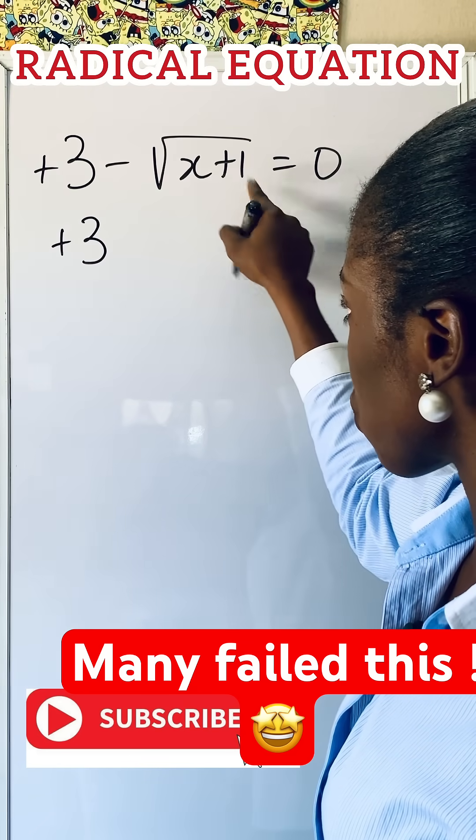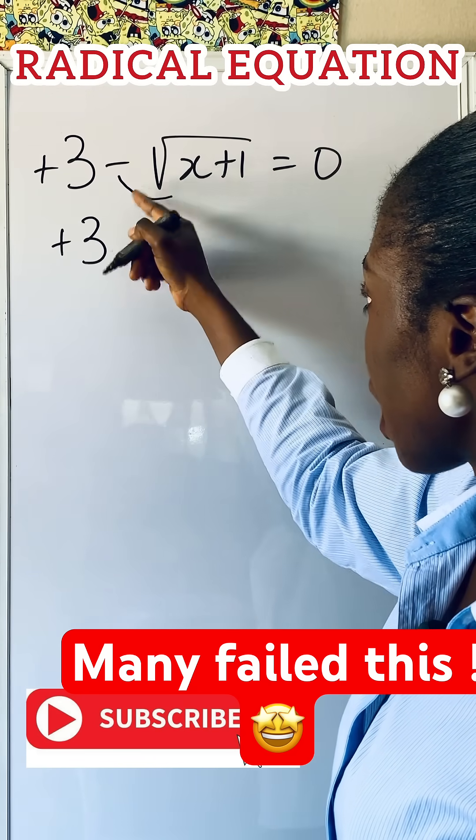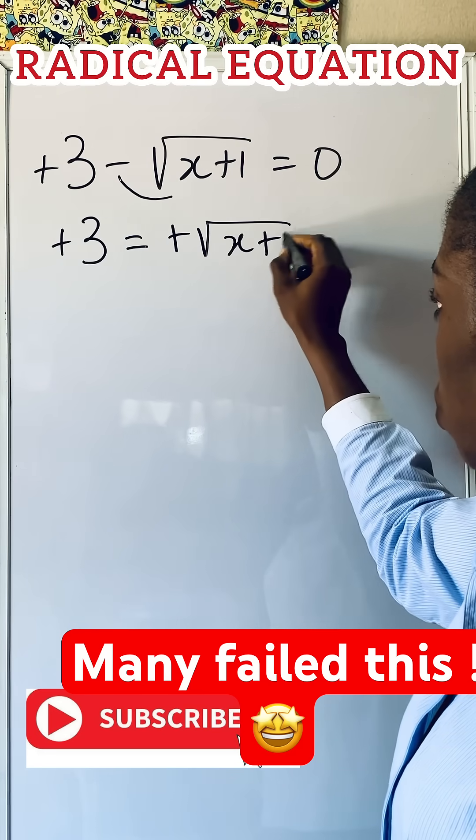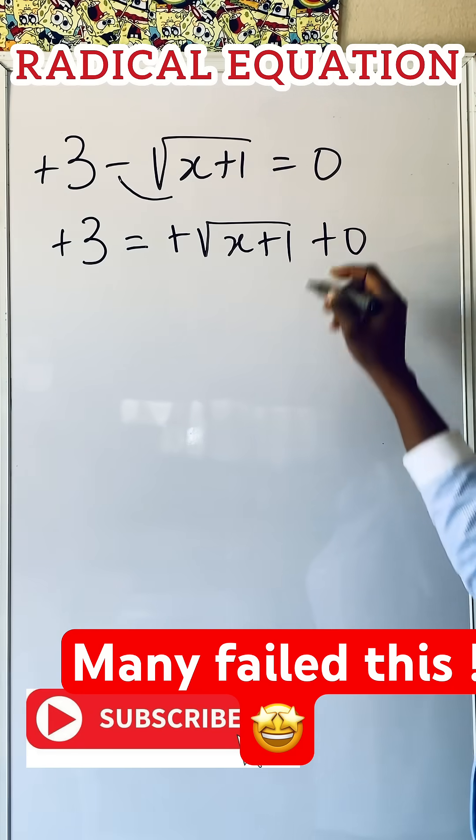So we are going to transpose this root, and you do it with the minus. So in that case, if you transpose it, it will be positive root x plus 1, then plus this 0.